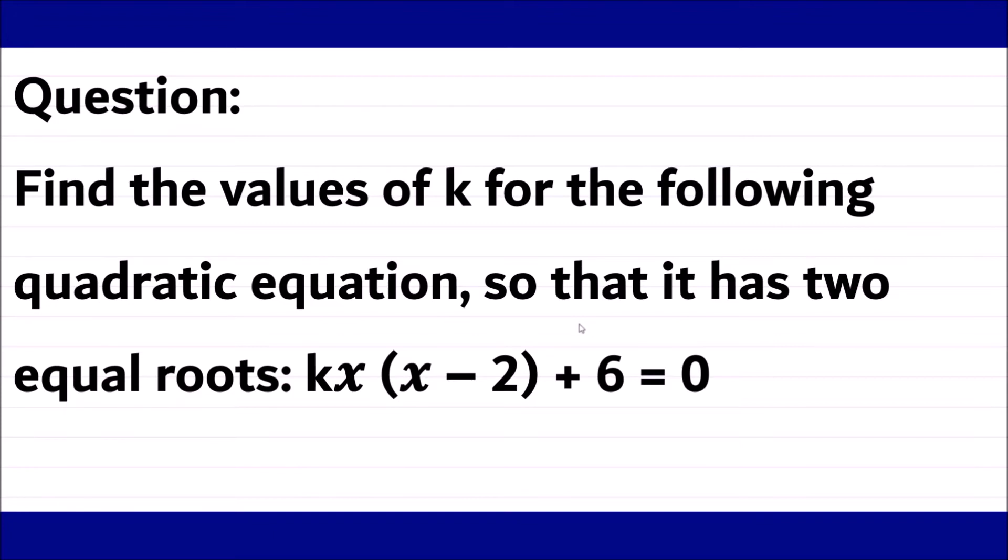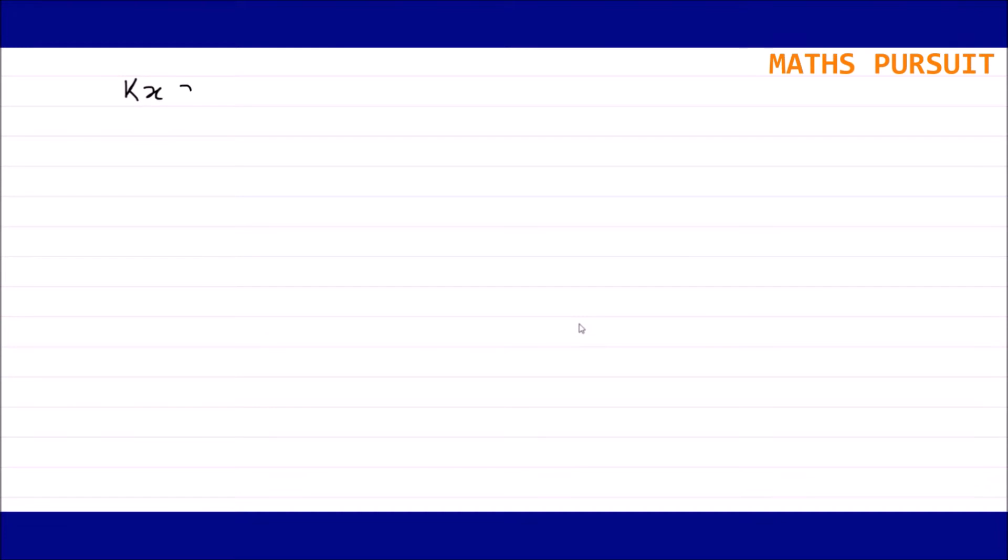Now let us move ahead and try to solve this equation. So the given equation is kx(x - 2) + 6 = 0. Let us first of all solve this one.